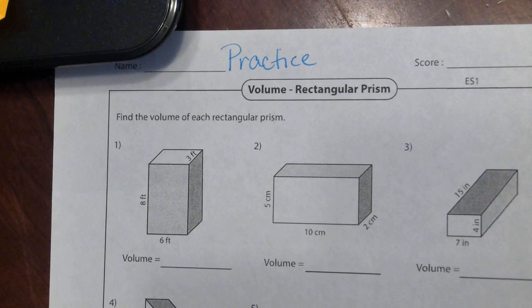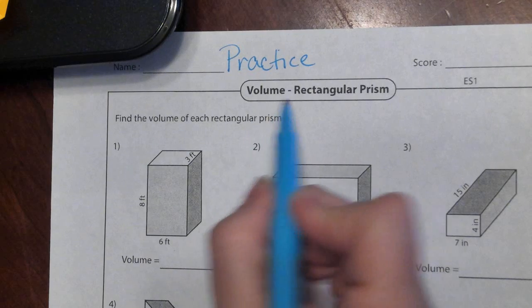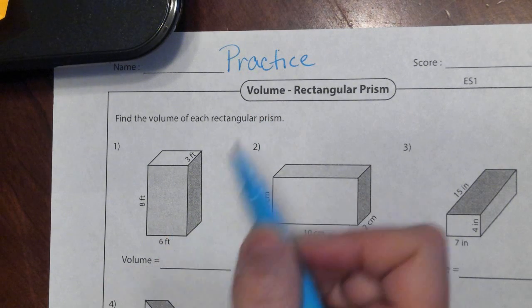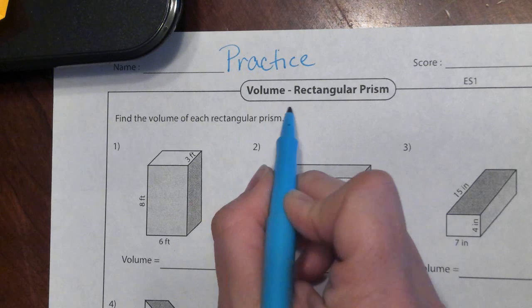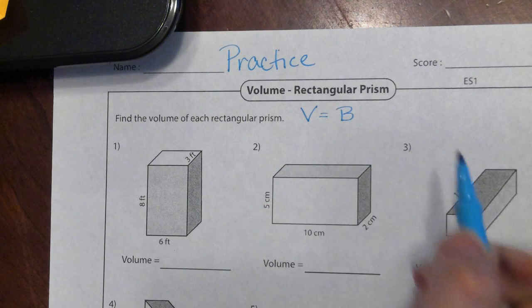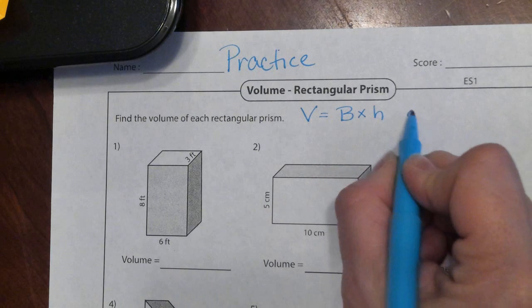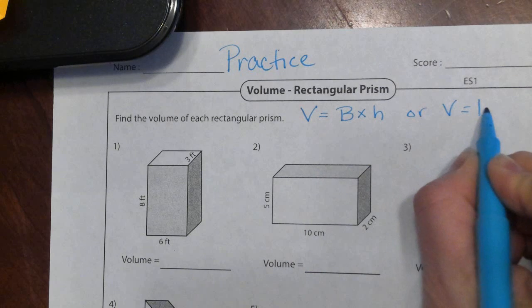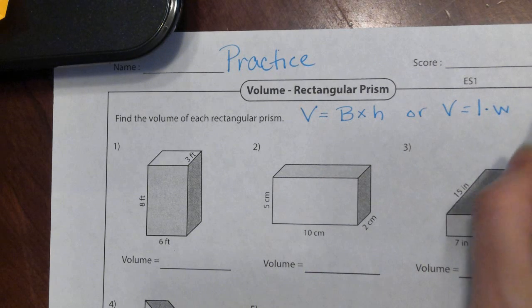Okay guys, we're going to do a little practice on volume of rectangular prisms. Remember, volume is what we use to fill up the three-dimensional shape. And our formula for volume is the area of the base times the height, or the area of the base is the length times the width times the height.